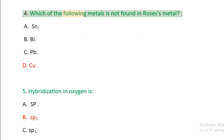Question 4: Which of the following metals is not found in Rose's metal? A. Sn, B. Bi, C. Pb, D. Cu.